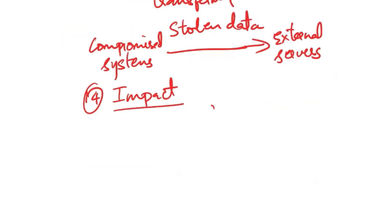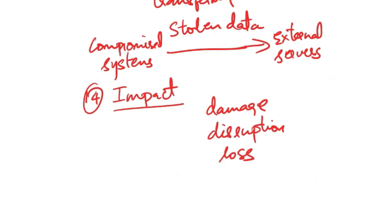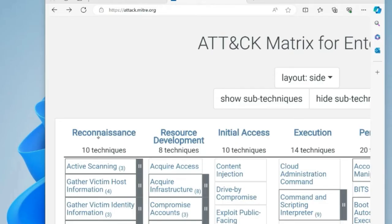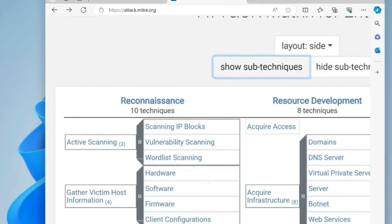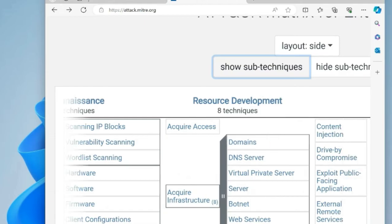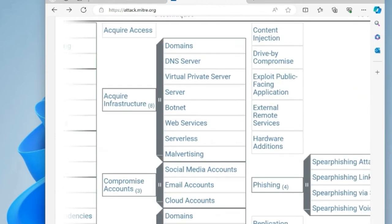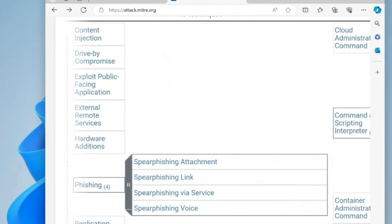The final tactic is impact — causing damage, disruption or loss within the target environment, such as deleting files, encrypting data for ransom or disrupting critical services. So we've now discussed all 14 tactics. There are many techniques and sub-techniques under each, which we can't cover all of, but let's look at some examples.